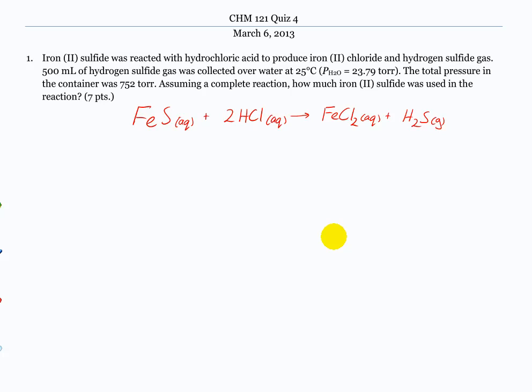So we're collecting this gas over water, which means what do you have to do? That's right. We have to subtract the vapor pressure of water out. And now we have to write it through the equation. Yeah, so we've got this vapor pressure of water, and the total pressure was 752 torr.